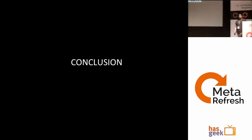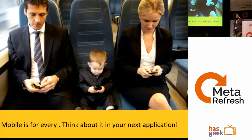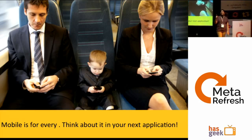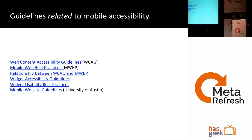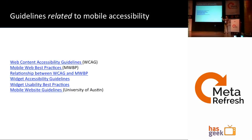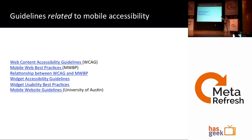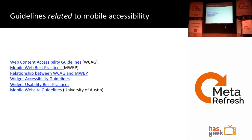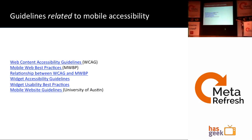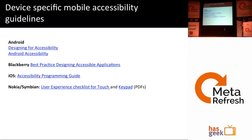The conclusion of this talk is simple: mobile is for everyone. Think about accessibility when you are designing your next application. There are guidelines available for mobile web best practices and accessibility — for mobile web applications and for native platform-specific guidelines — which you can look at.